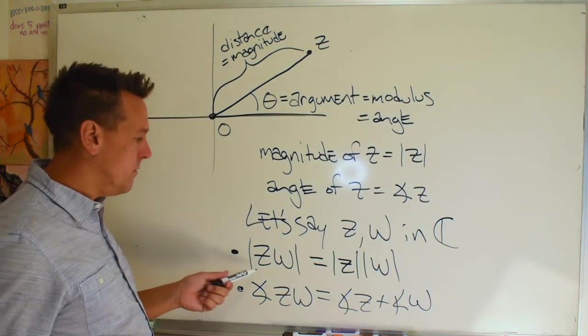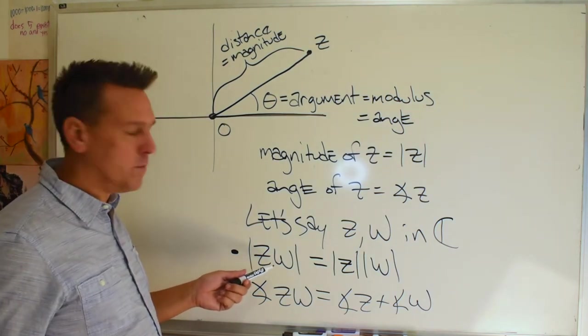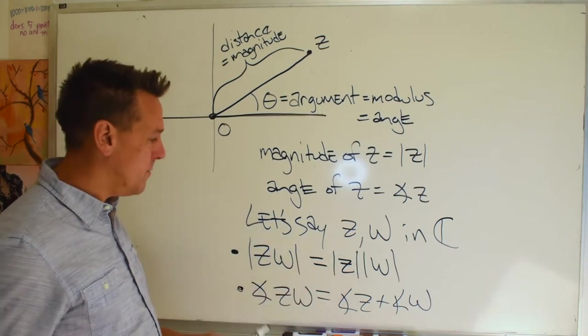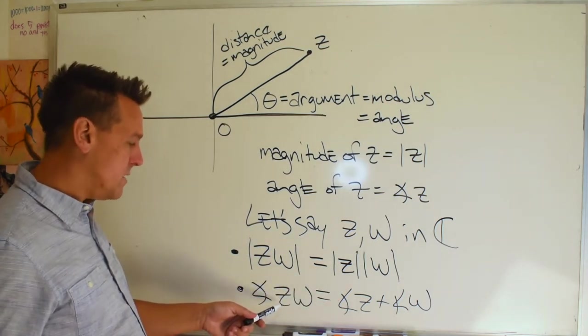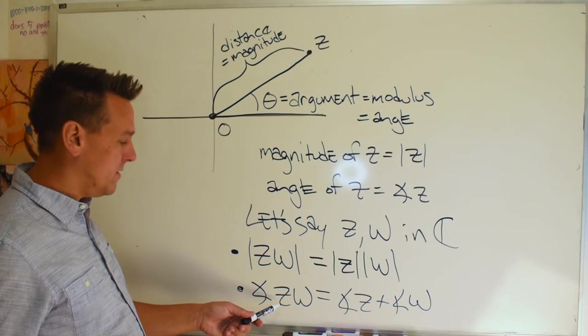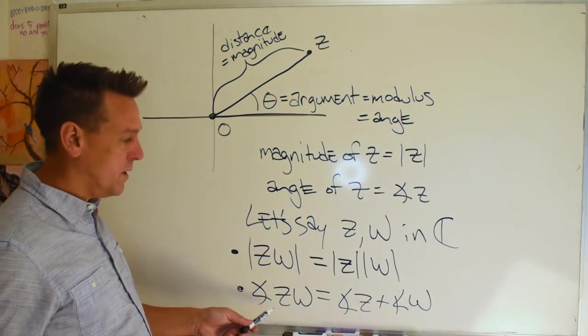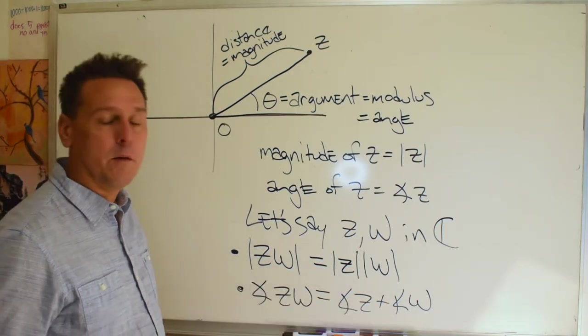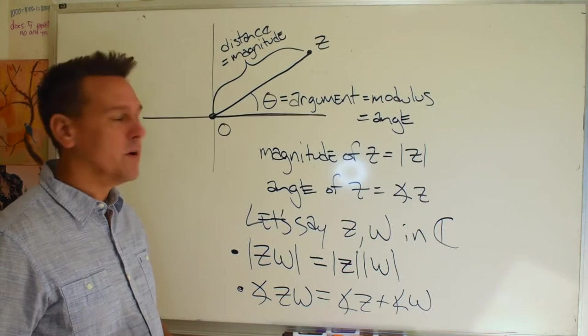So we just got done showing that if you multiply two points together in the complex plane, you multiply their magnitudes. And if you multiply two points together, the angle of the resulting point is the sum of the two angles of the points previously.